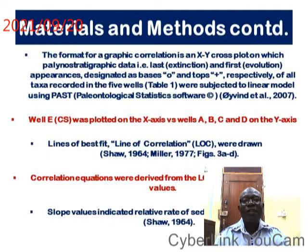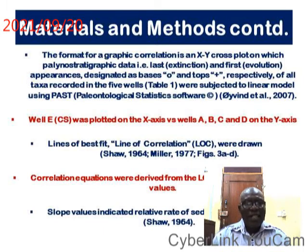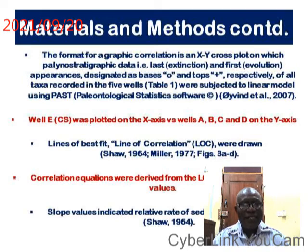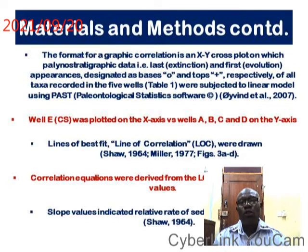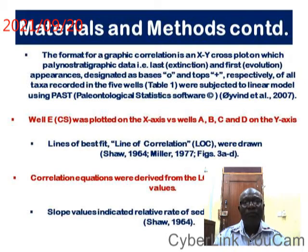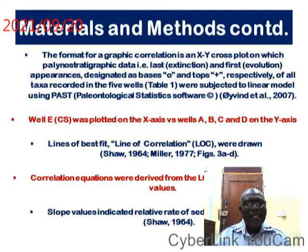The format for graphic correlation is an X-cross plot on which paleostratigraphic data — that is, last extinction and first evolution appearances, designated as bases and tops respectively — of all 44 taxa recorded in the five wells were subjected to linear modeling using PAST, that is, Paleontological Statistics software. Well E was plotted on the X axis against wells A, B, C, and D on the Y axis.